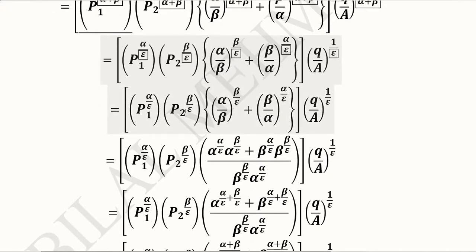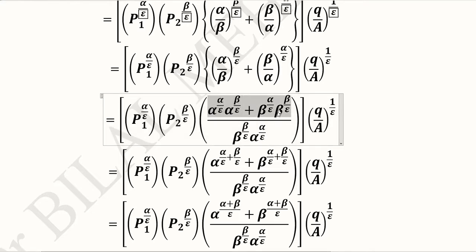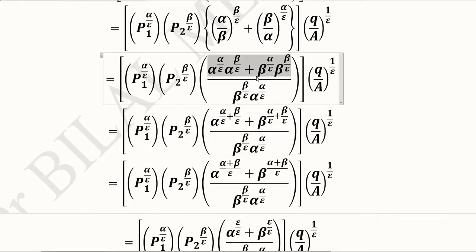After this, we remove the boxes from all the elasticities. Now we take the LCM from this term: α has power β over ε and β also has power β over ε; β has α over ε and α has the same power. So we take LCM — that is β raised to the power β over ε and α with power α over ε. Both appear in the form of a product in the LCM, and this will be the answer in the numerator. You can pause the video to see how this symbolic LCM is taken.